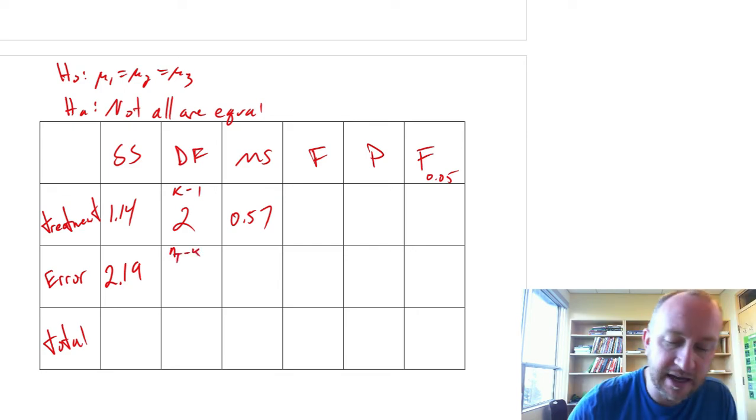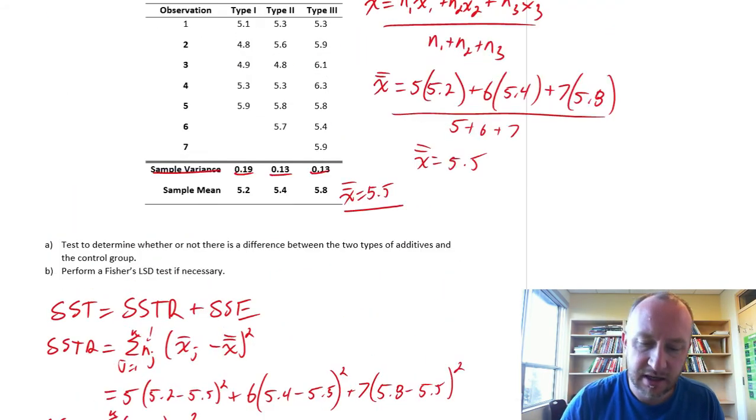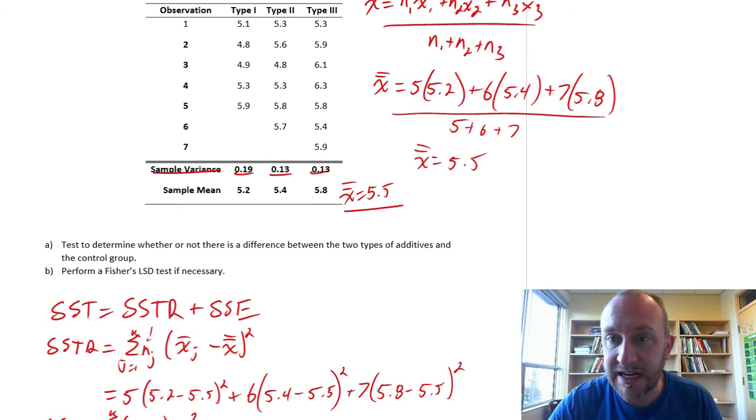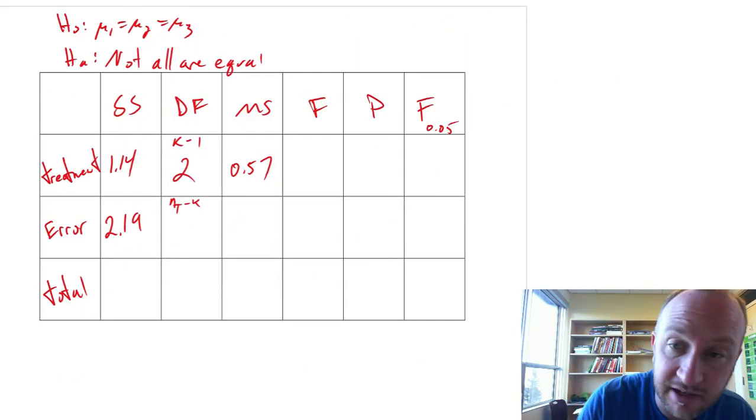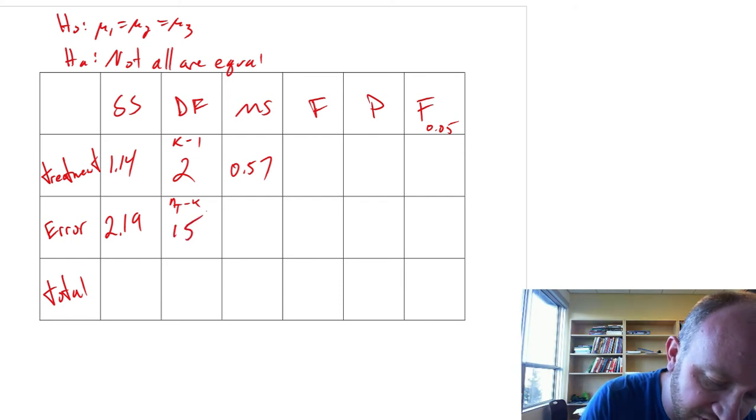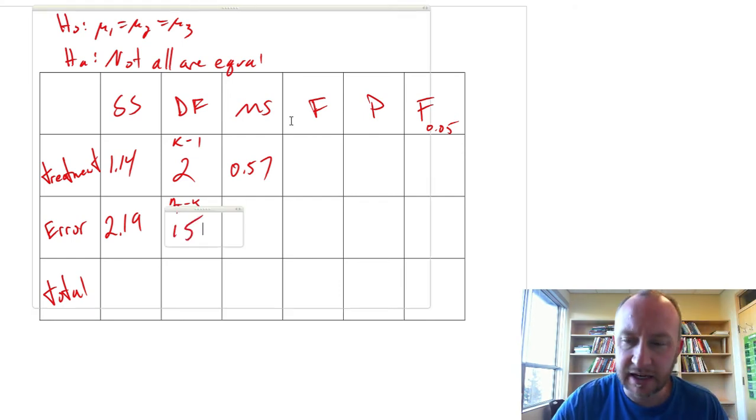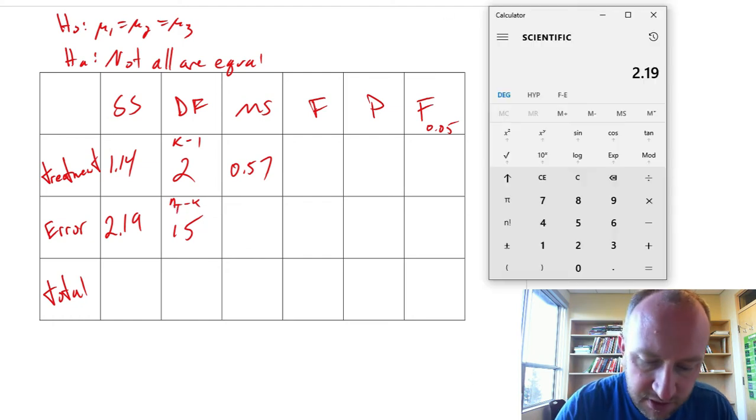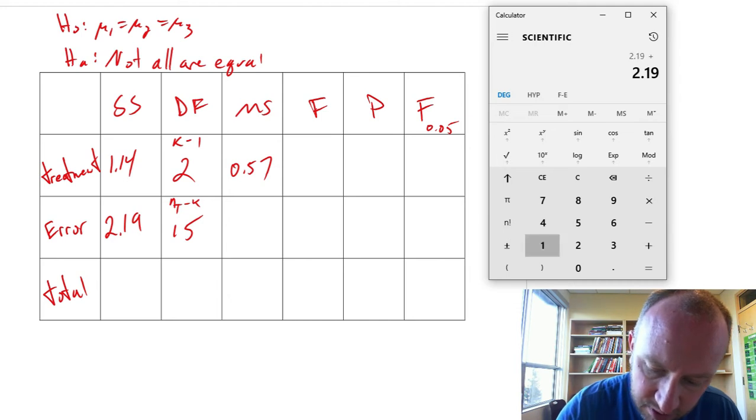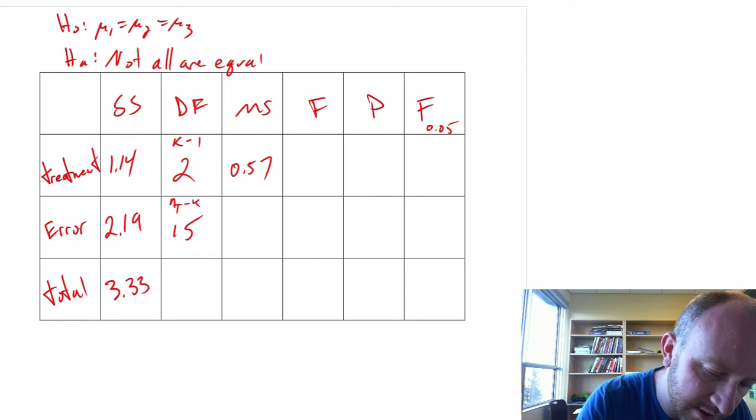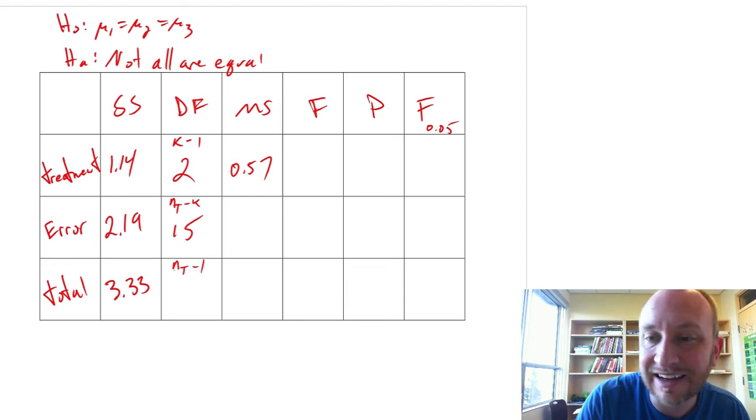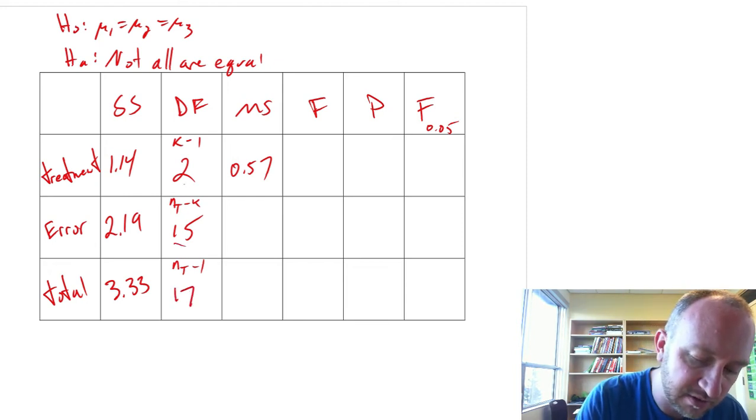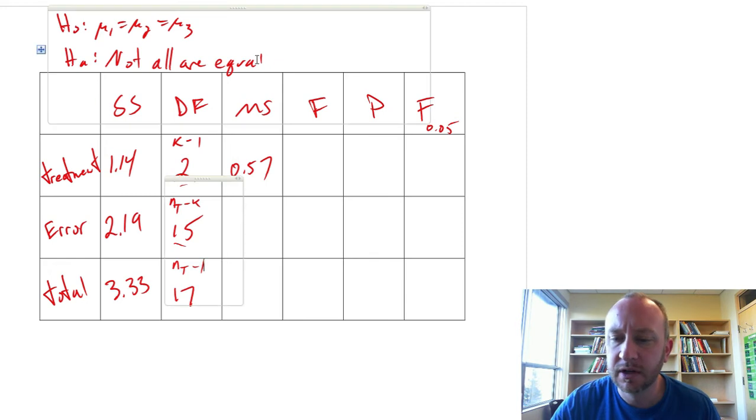2.19. Degrees of freedom, NT minus K. So NT, we have 5 plus 6 plus 7, we have 18 observations. 18 minus 3 treatments, so this is 15 degrees of freedom. And then filling in the rest here for SST. 2.19 plus 1.14, 3.33. Degrees of freedom here, this is NT minus 1. That's 18 minus 1 is 17, which is also 15 plus 2.